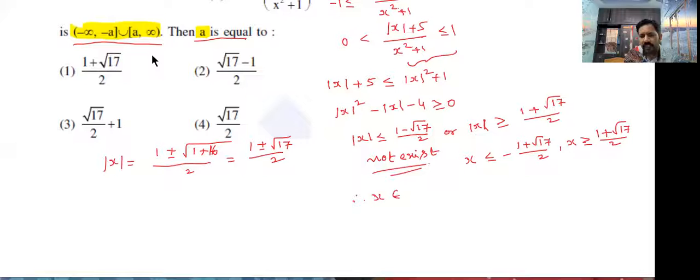So overall the domain of the function is x belongs to minus infinite comma minus 1 plus root 17 by 2 closed union closed 1 plus root 17 by 2 comma infinite.